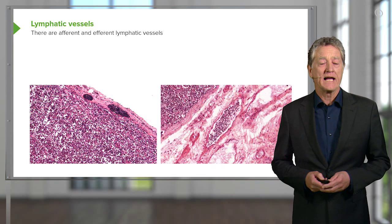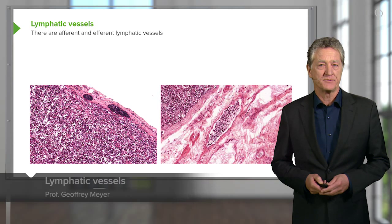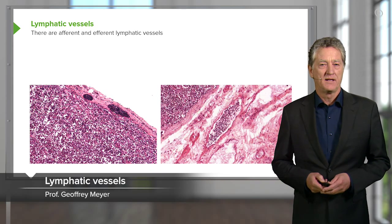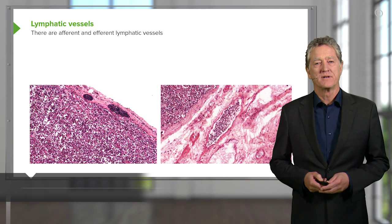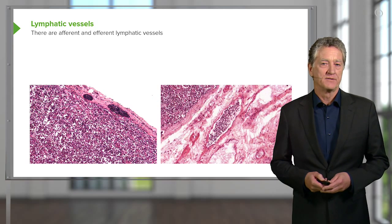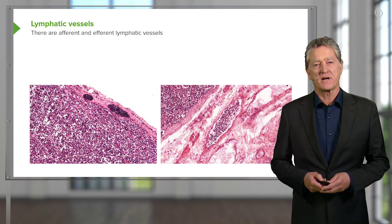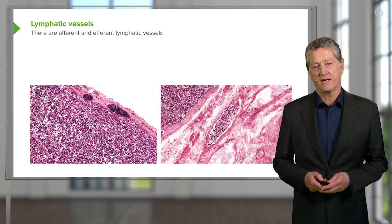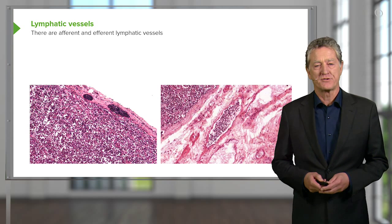Let's finally look at a lymphatic vessel. Here are two images of a section through a lymph node. Lymph nodes are structures that I'll talk about in more detail when we look at the lymphoid tissues.